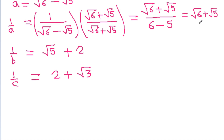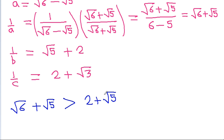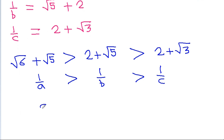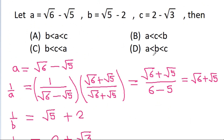We know that root 6 is greater than 2, so root 6 plus root 5 will be greater than 2 plus root 5. And 2 plus root 5 will be greater than 2 plus root 3. So 1 by a is greater than 1 by b, which is greater than 1 by c. Therefore we get a less than b less than c. So the correct option is option D.